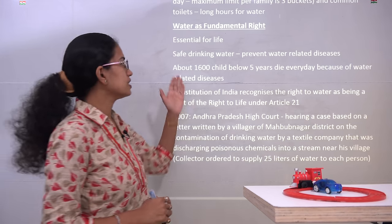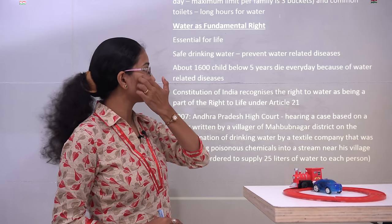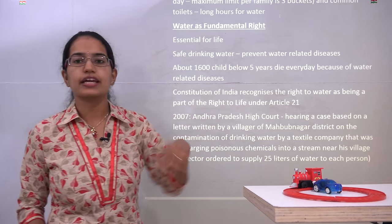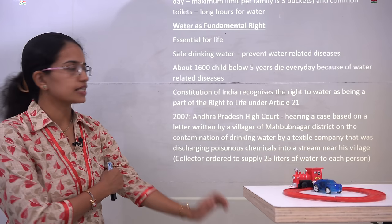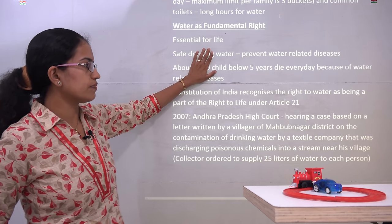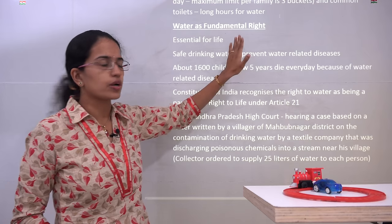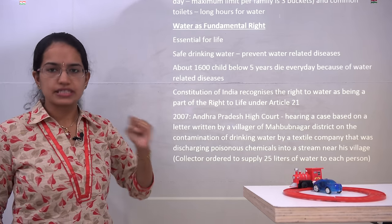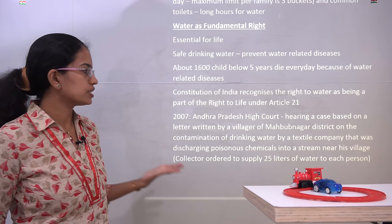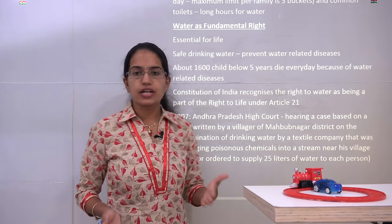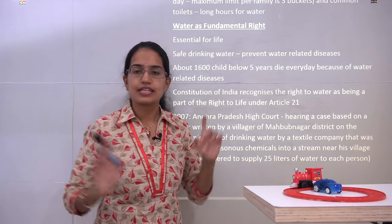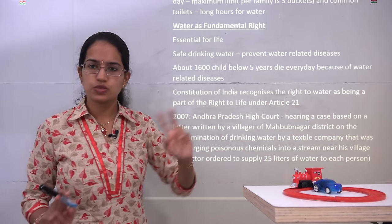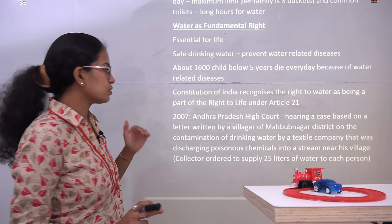Statistics reveal that nearly 1,600 children below the age of 5 die every day because of water-related disorders. The Constitution of India recognizes the right to water as the right to life under Article 21, making it a fundamental right for every citizen. Since it is a fundamental right, it is the duty of the government to provide essential water requirement facilities to each and every citizen.